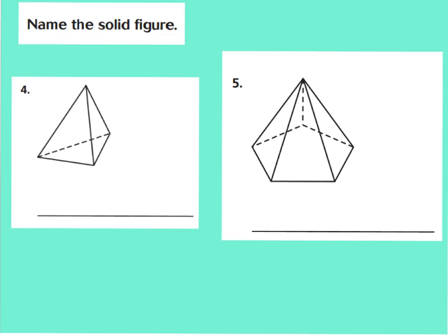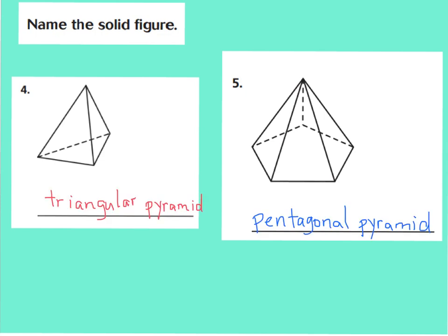For number four, you should have said triangular pyramid, because it has a triangle base with triangle faces. For number five, it's a pentagonal pyramid because you have a pentagonal base with five triangular faces.